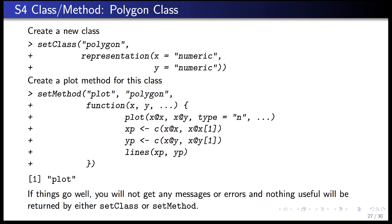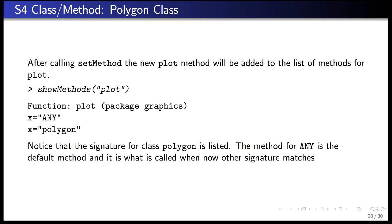After calling setMethod for the polygon plot method, that method gets added to the global list of methods for plot. Calling showMethods on plot shows two methods defined: one for 'any' (the default, which takes any type of object) and one for 'polygon' (the one we just defined). If you call plot on some other data type, it uses the default 'any' method; if you call it on a polygon object, it calls your custom method.